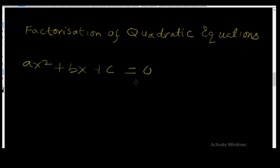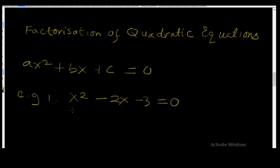We're going to use the same method to factorize. Let's take example one: factorize x² - 2x - 3 = 0. Just like we did with quadratic expressions, to factorize this equation you will need to find two numbers whose product is -3 and whose sum is -2. The product of the two numbers is -3 and the sum is -2, meaning when you multiply the two numbers you get -3.